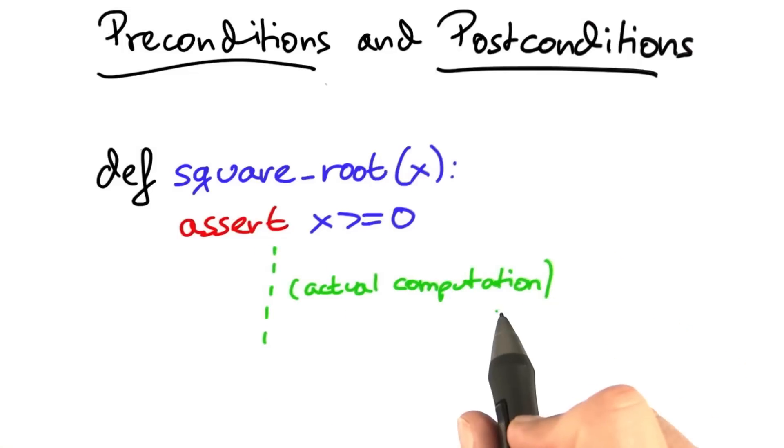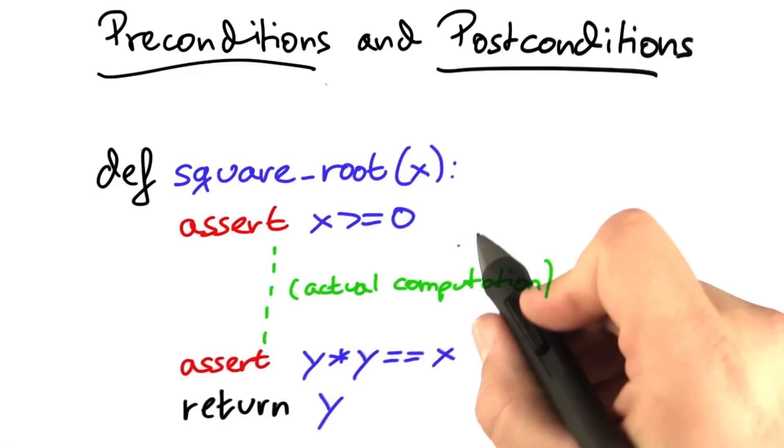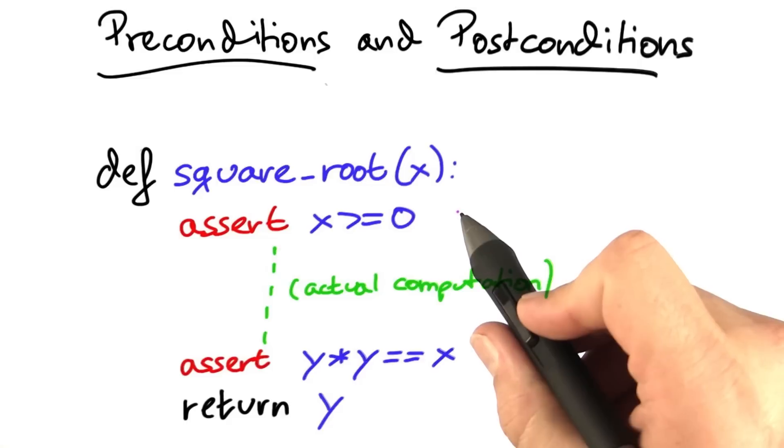I'll skip the actual computation of square roots here, because this is subject of another class. But before we return the actual square root, we want to make sure that the square root actually is a square root.